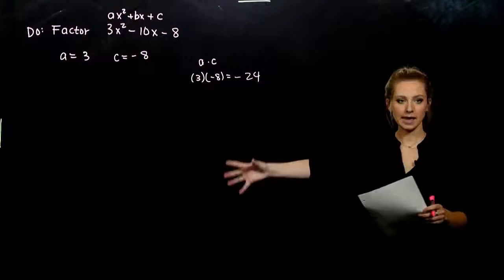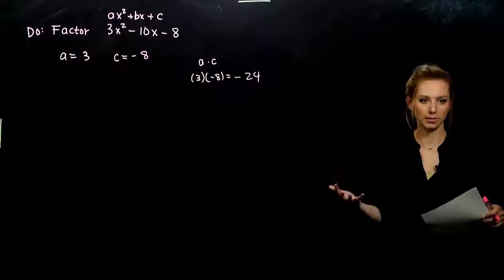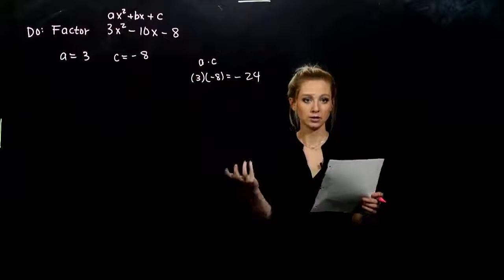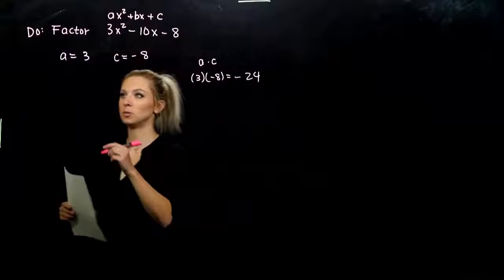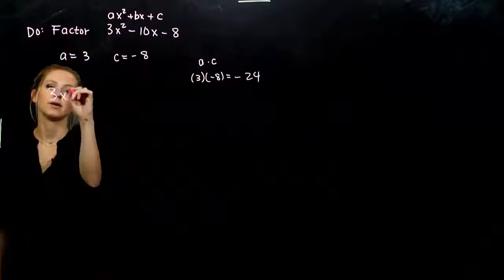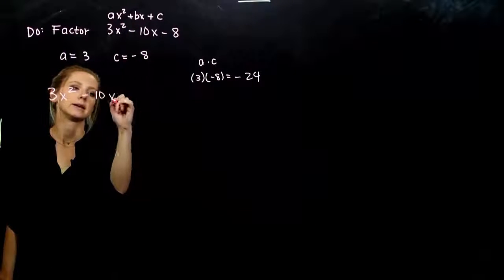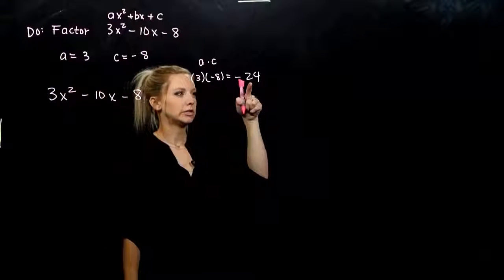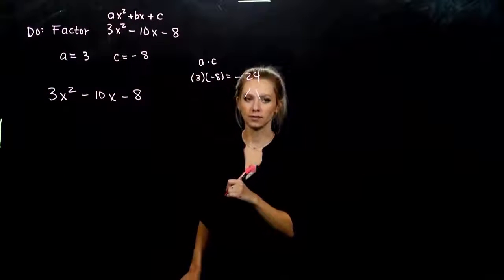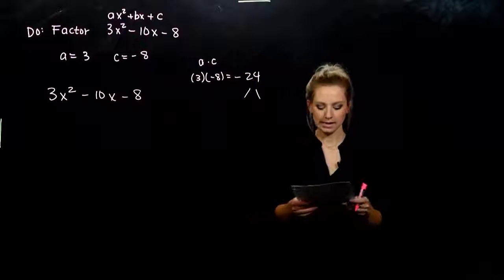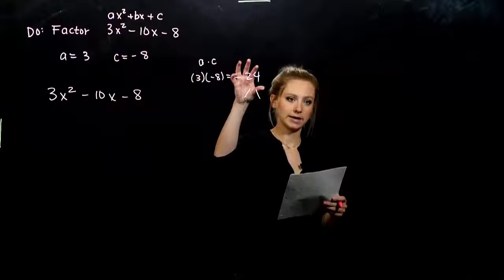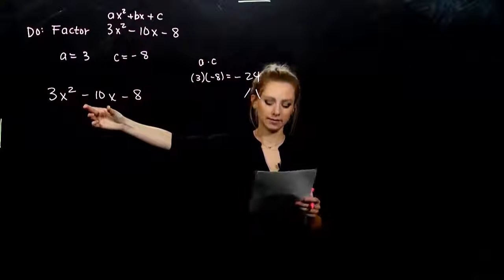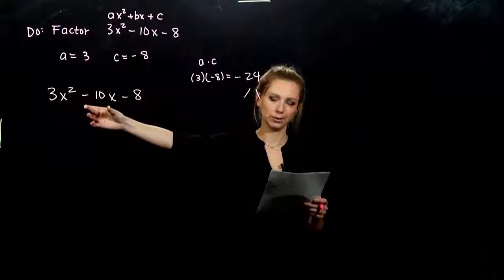What this AC method does: we take our A value and we take C and multiply them together. So if I take 3 and multiply it by negative 8, we get negative 24. We take A, we take C, and we multiply them together — hence the name, the AC method. So now we behave as normal. I'm still trying to factor 3x² minus 10x minus 8. I need to look at breaking up negative 24 into things that multiply to negative 24 and add to negative 10 — add to that middle term.